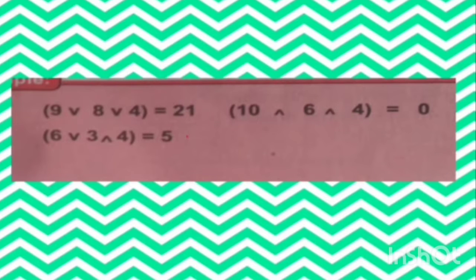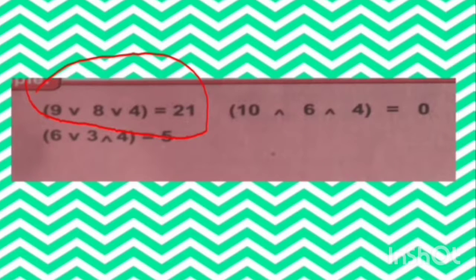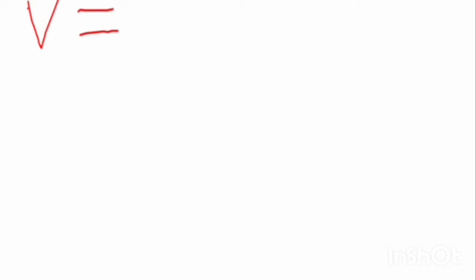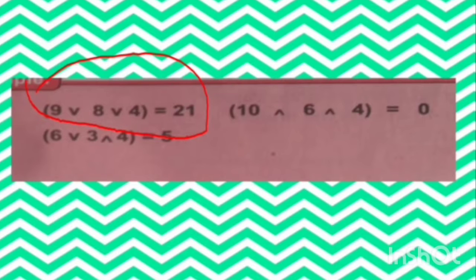We have three examples to explain here. In example 1, let's take a look at this sample. The symbol shown here represents plus. So let's make use of this plus sign to look for the missing number.